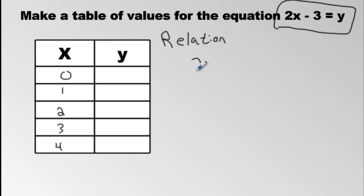So instead of writing 2 times x, remember these are being multiplied, I'm going to write 2 times 0, because that's what x is here. I'll put it in brackets, and then what comes after? Minus 3. And whatever I get is going to be y. So 2 times 0 is 0, minus 3 is negative 3. I'll put negative 3 here.